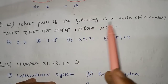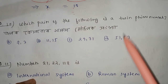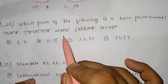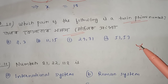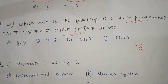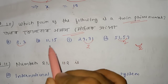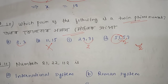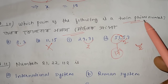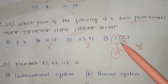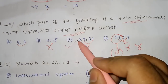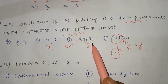Which pair of the following is a twin prime number? Twin prime numbers differ by 2. For example, 17 and 19 differ by 2, making them twin primes.